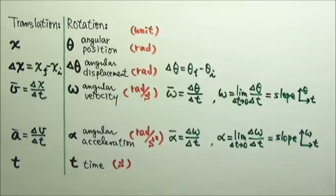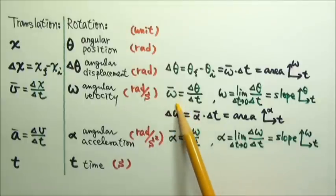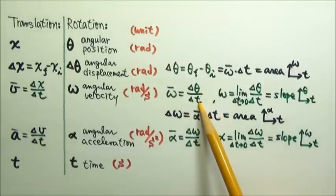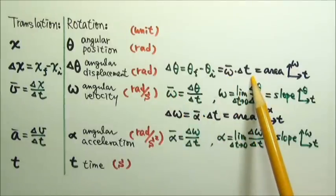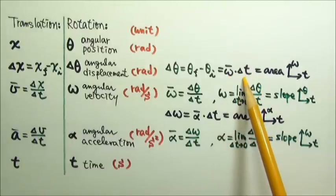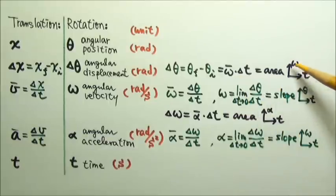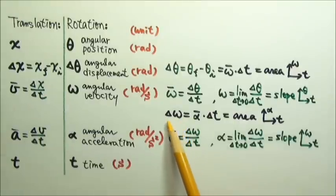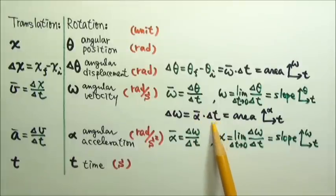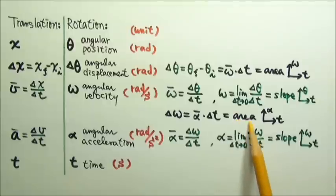Because average angular velocity is delta theta over delta t, delta theta equals average angular velocity times time. If we're multiplying, that is like height times base, so it is also the area of the omega versus t graph — average omega is the height and delta t is the base. And delta omega is the average alpha times time, so it is the area of an alpha versus t graph.